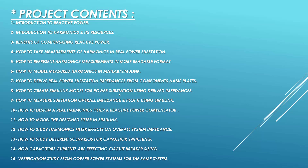After deriving the parameters or impedances for each and every component in the substation, how are you going to model them in MATLAB Simulink? Then, after creating the overall impedance single line diagram, how are you going to measure the impedance and plot it in Simulink? And the most interesting part: after modeling it and getting the impedance plot, what can you understand from the output?